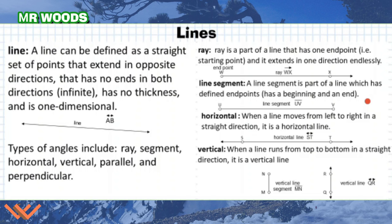There's a horizontal line. When a line moves from left to right in a straight direction, it is a horizontal line. So here we go. There's that horizontal line. And again, note the notation here for that horizontal line because I have an arrow at either end. Then there's a vertical line. When a line runs from top to bottom in a straight direction, it is a vertical line. So here we go. Here's my vertical line. So I have a vertical line QR here. But right next to it, I have a vertical line segment. Notice how I have the endpoints there. So we can mix and match some of these words together to define exactly what we're working with.